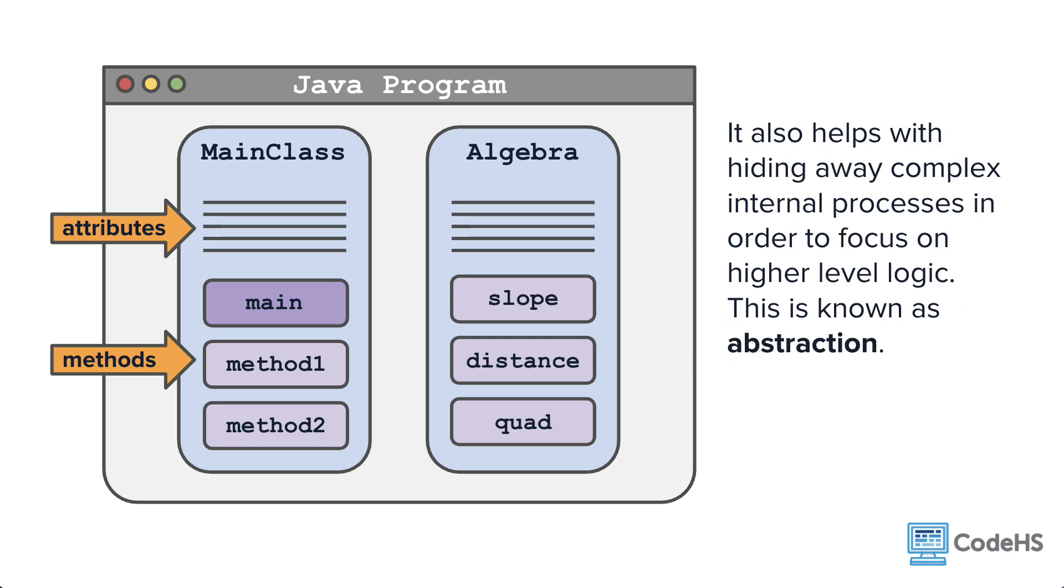It also helps with hiding away complex internal processes in order to focus on higher-level logic. This is known as abstraction. Programmers can now just call a class method without needing to know all of the details required to implement it. You'll learn more about these practices later in the course as you begin designing your own classes.